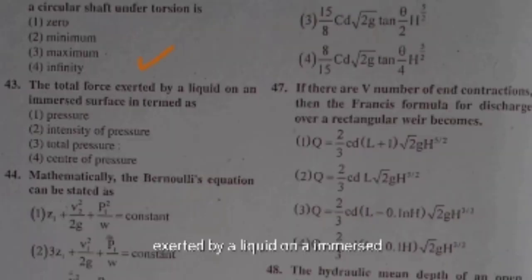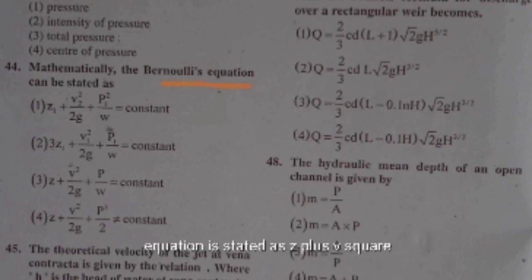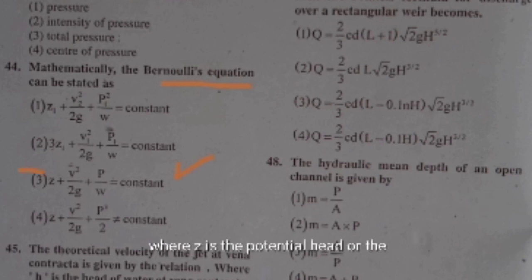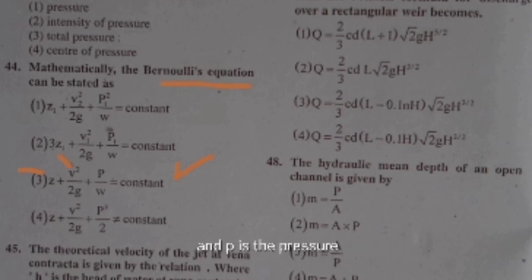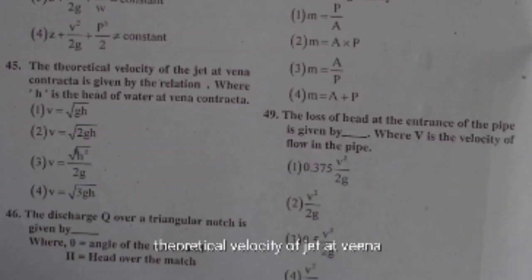The total force exerted by a liquid on an immersed surface is called total pressure. Bernoulli's equation is stated as: z + v²/2g + p/w = constant, where z is the potential (datum) head, v is the velocity, and p is the pressure.